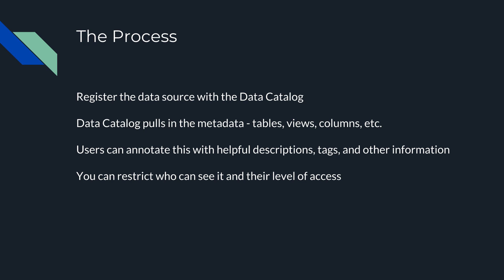So here's the process: you create an Azure Data Catalog and then start to register one or more sources. By registering, you're pointing to where that data exists within your environment. The Data Catalog then pulls in the metadata for that source — in a table situation that could be tables, views, and columns; it could also be blob storage or other types of data.